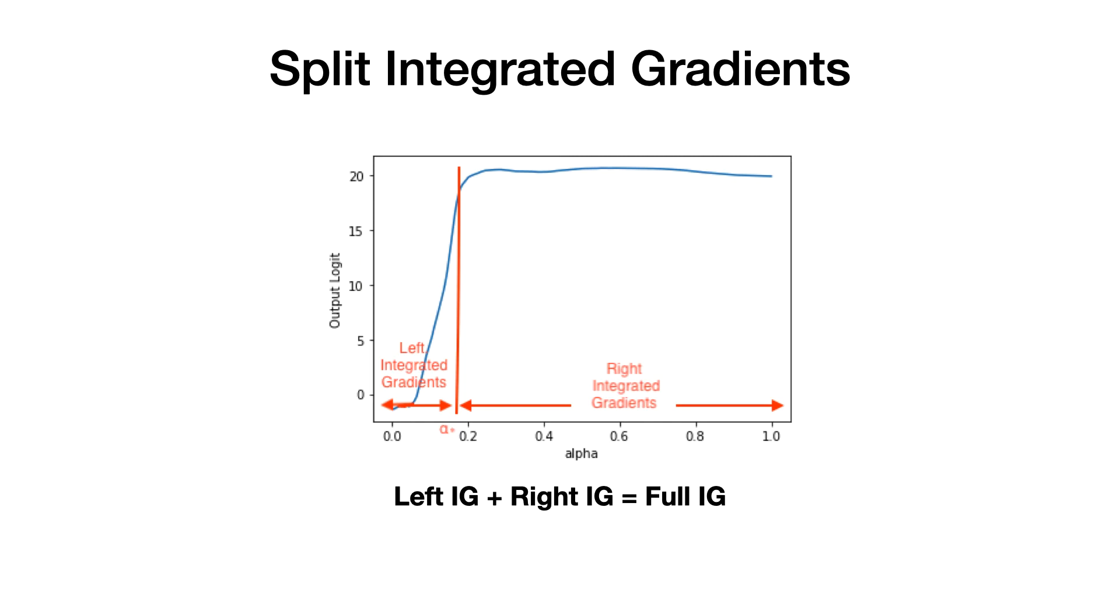In order to do this, we define split IG, which divides the integral into two parts, choosing a cutoff where the output is close to the final output. The left integral covers the substantial change in output, while the right integral covers the saturated area where model output doesn't change substantially. Since we are simply splitting the integral into two, summing left IG and right IG gives the original integrated gradients.